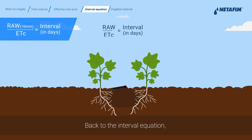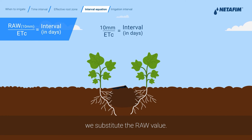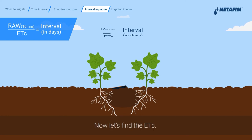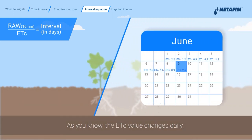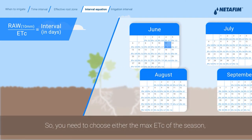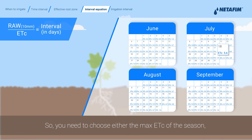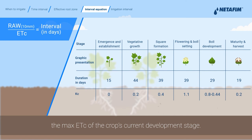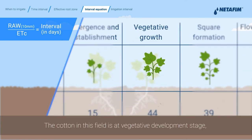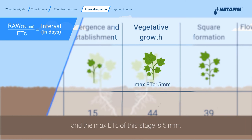Back to the interval equation — we substitute the RAW value. Now let's find the ETC. As you know, the ETC value changes daily, so you need to choose either the max ETC of the season or, to be more precise, the max ETC of the crop's current development stage. The cotton in this field is at a vegetative development stage, and the max ETC of this stage is 5 millimeters. We'll use this value for the calculation.